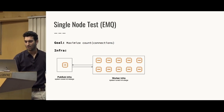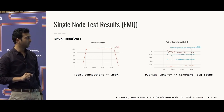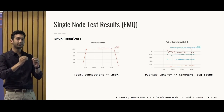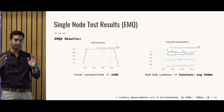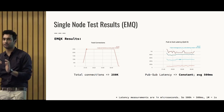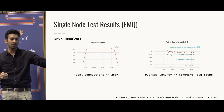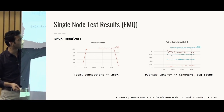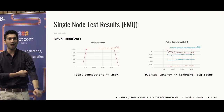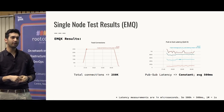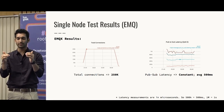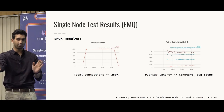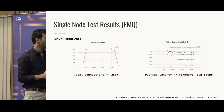Our test scenario was simple: ramp up connections from zero to 250,000, hold there for system stabilization, then start publishing messages at 36K RPS from one backend service sending to all subscribed clients. Then we'd stop message delivery and ramp down. We tested at 36K RPS because that's the maximum number of messages a user could reasonably read. This was the happy-case test first.